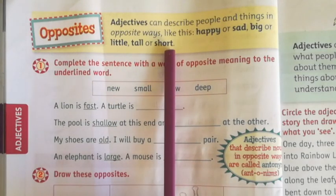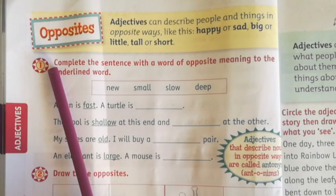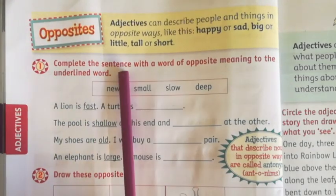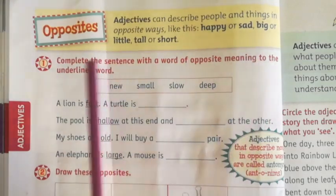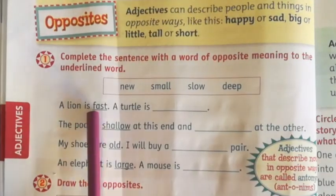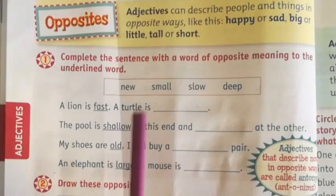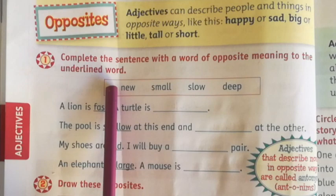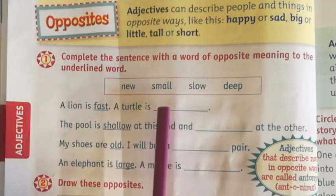You have already seen that opposites have different meanings from each other. Now let's come to question number one: complete the sentence with the word of opposite meaning to the underlined word. In each line there are underlined words and their opposites are given in a box — you will put the right opposite and fill in the blank.